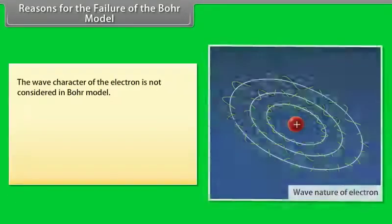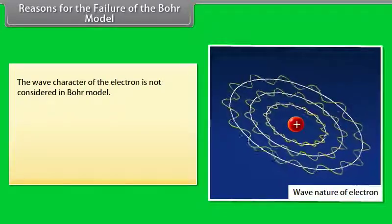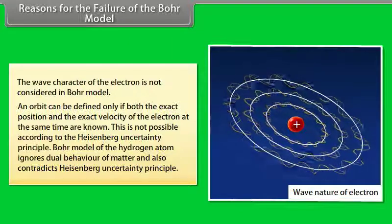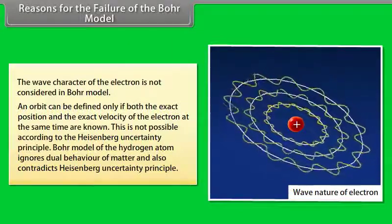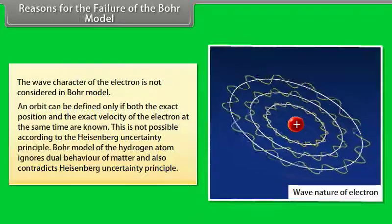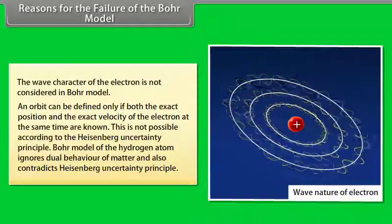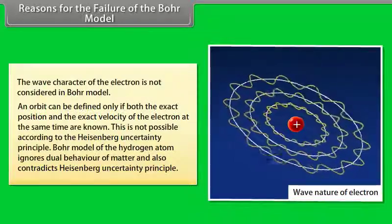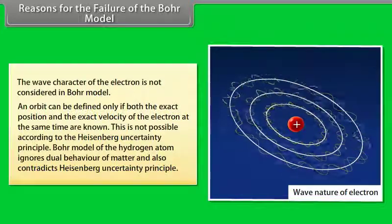Reasons for the failure of the Bohr model: The wave character of the electron is not considered in the Bohr model, and the orbit can be defined only if both the exact position and the exact velocity of the electron at the same time are known. This is not possible according to the Heisenberg Uncertainty Principle. The Bohr model of the hydrogen atom ignores the dual behavior of matter and also contradicts the Heisenberg Uncertainty Principle.